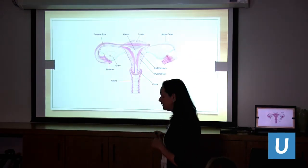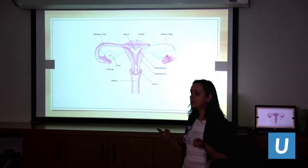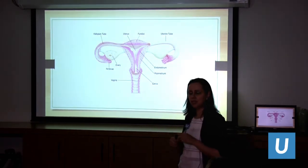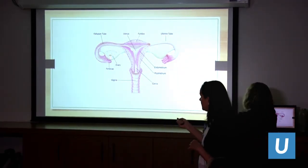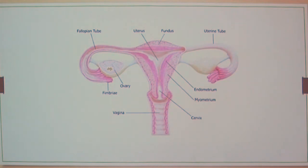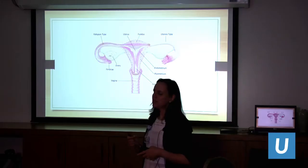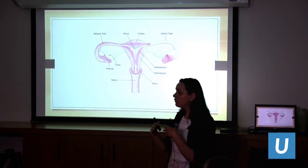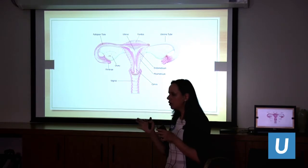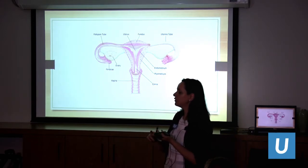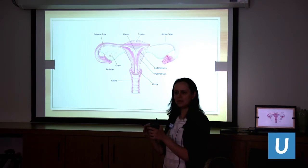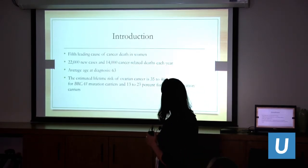Ovarian cancer as a term, and the treatments we will talk about, refers to whether the cancer is originating in the ovaries, the fallopian tubes, or what is called the peritoneum — a lining that covers the stomach and intestines. Cancer of those areas are also treated like ovarian cancer. So peritoneal carcinomatosis, ovarian cancer, and cancer of the fallopian tube all fall under the same umbrella in terms of treatment.